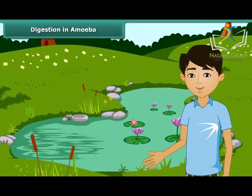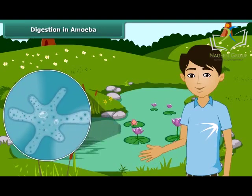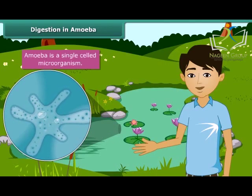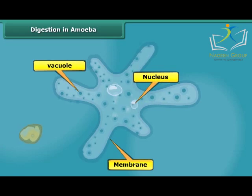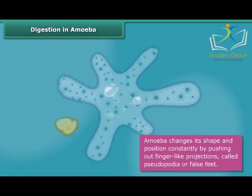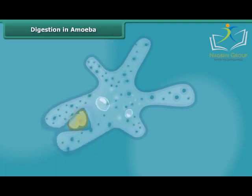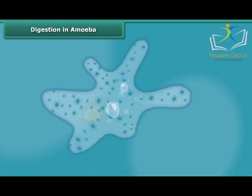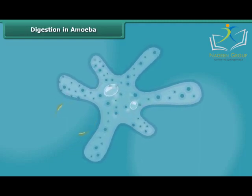You will be surprised to know that there are certain organisms which do not have a mouth and a digestive system, yet they digest food. This organism is amoeba, which is found in ponds. It is a single cell and cannot be seen with the naked eye. It has a cell membrane, a rounded nucleus, and vacuoles in its cytoplasm. It changes its shape and position constantly by pushing out finger-like projections called pseudopodia, or false feet, and captures microscopic organisms as its food. The food becomes trapped in a food vacuole and digestive juices break it down into simpler substances. Finally, the undigested food is expelled outside by the vacuole. Thus, all animals have the same basic process of digestion.